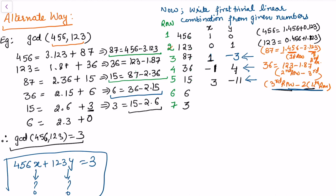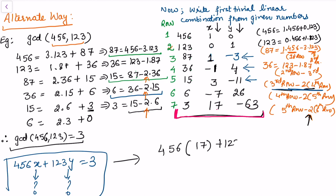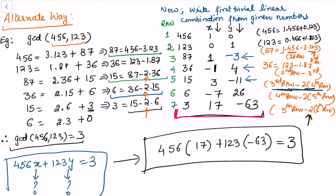For the remainder 6, we take row4 - 2×row5, giving coefficients (-7, 26). For the last remainder 3, we take row5 - 2×row6, giving coefficients (17, -63). So from this final row, 3 = 17×456 + (-63)×123. These are the values x = 17 and y = -63, satisfying 456x + 123y = 3. This is the tabular method for applying the extended Euclidean algorithm.